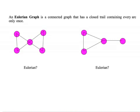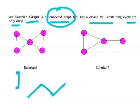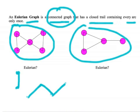We have two definitions of whether a graph is Eulerian. The first is that we're working with a connected graph that has a closed trail containing every arc only once. A connected graph means we can get from one node to the next. A closed trail means we go arc to arc and begin and end at the same place, using each arc only once.